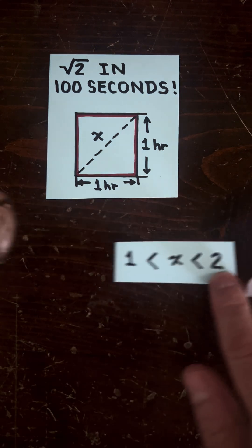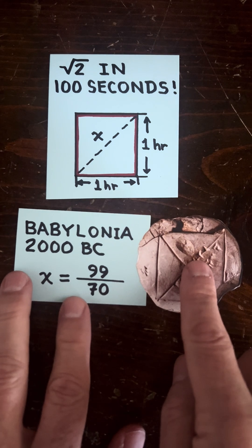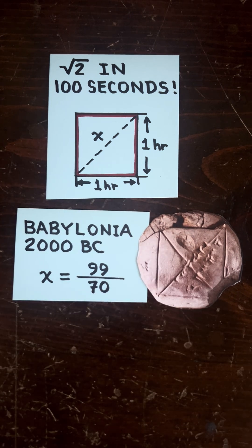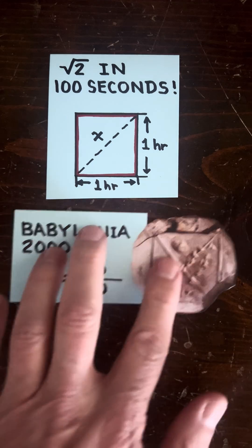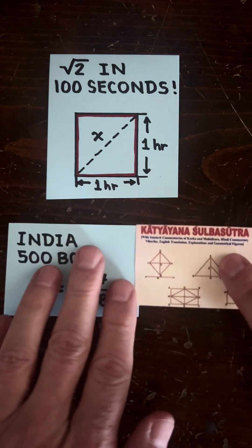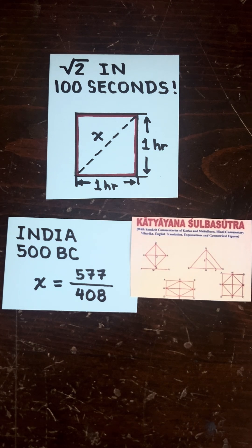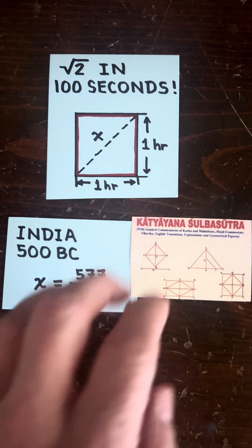Now, in the Babylonian times, according to this stone tablet, they estimated X to be 99 over 70, which was a pretty good estimate. And Indian mathematicians estimated it to be 577 over 408, which is an even better estimate.